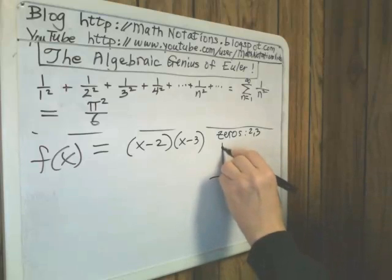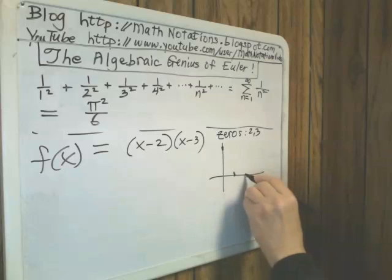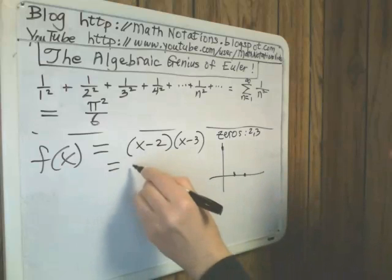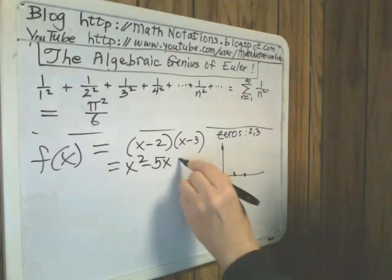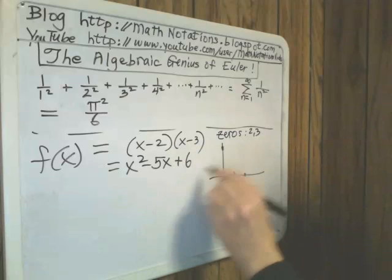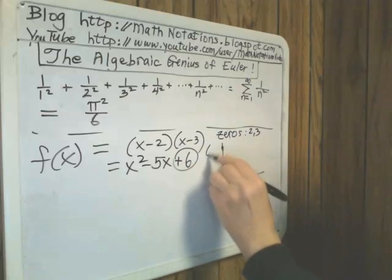And the graph of this quadratic function would have a y-intercept and two x-intercepts. If I multiply this out, if I expand it, x squared minus 5x plus 6. So this would be the y-intercept,